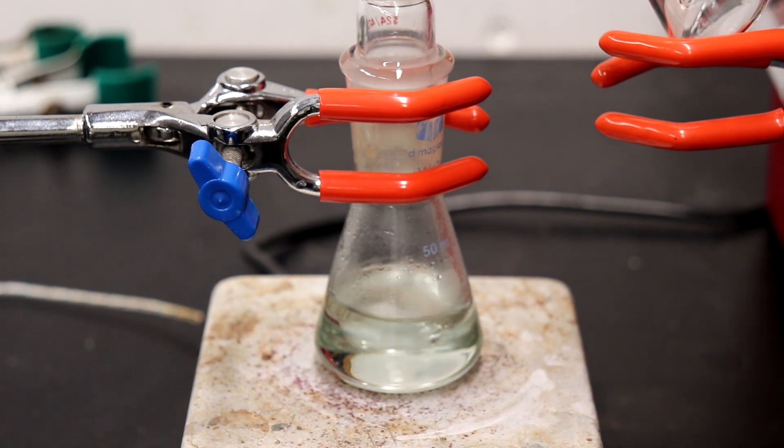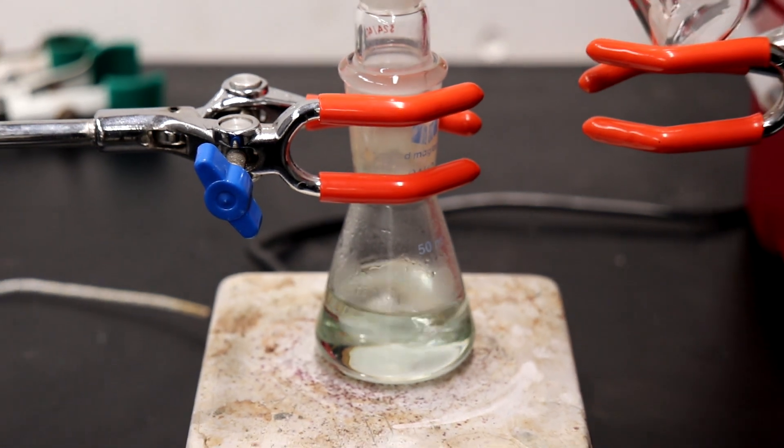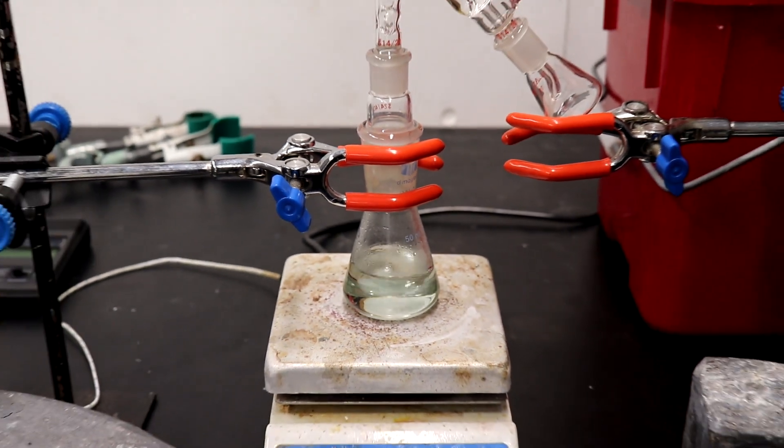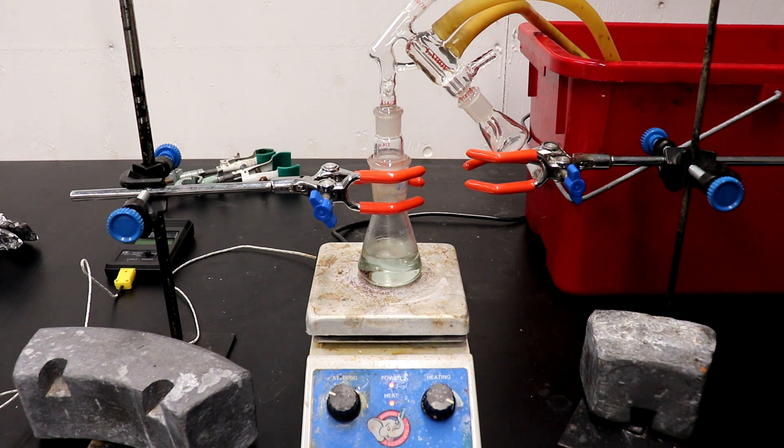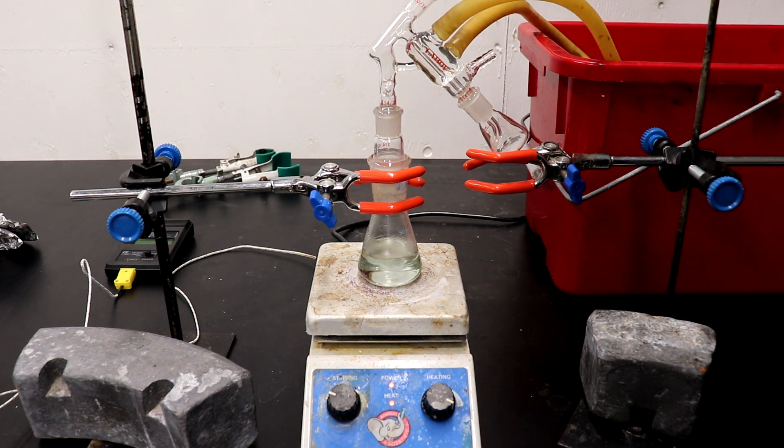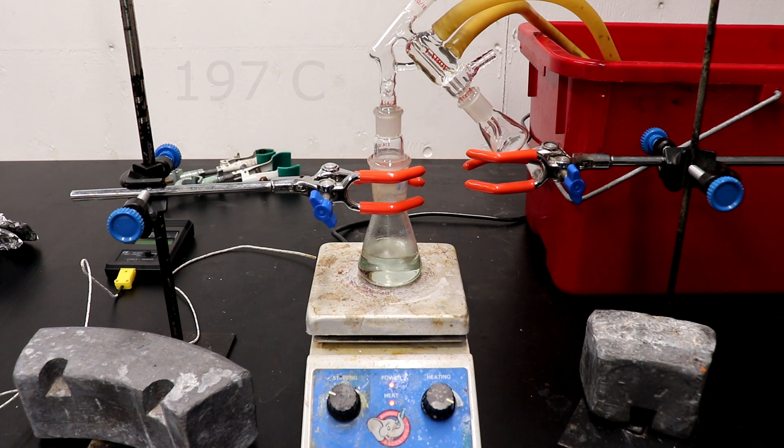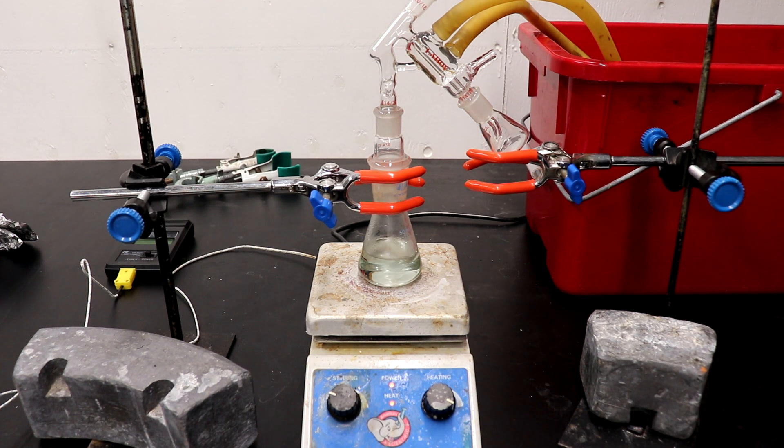I put the 1,4-dibromobutane on the hot plate, and I've set up for a short path distillation, and we're going to be distilling off the product to purify it further. Definitely want to have a short path with this because the boiling point is very high, 200 degrees Celsius in fact. We're going to be collecting some forerun likely before, so I set up with a smaller receiving glass, and then I'll switch out for a 50 ml Erlenmeyer or a 50 ml ground bottom after that.